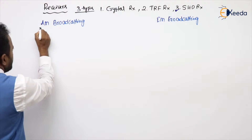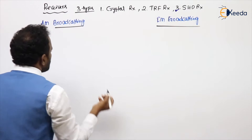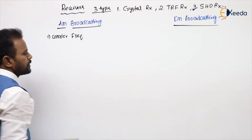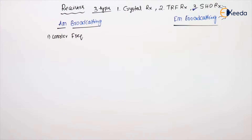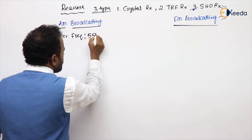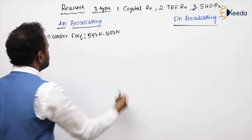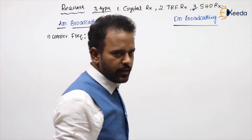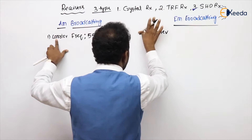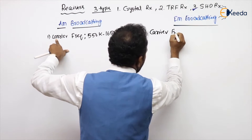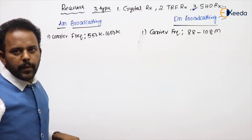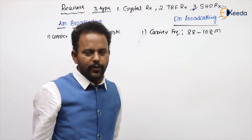The first point is the carrier frequency. For AM broadcasting, the carrier frequency range is 550 kHz to 1650 kHz. For FM broadcasting, you can check your radio app — it runs from 88 MHz to 108 MHz. Your app may show 0.5 on each side as buffer.